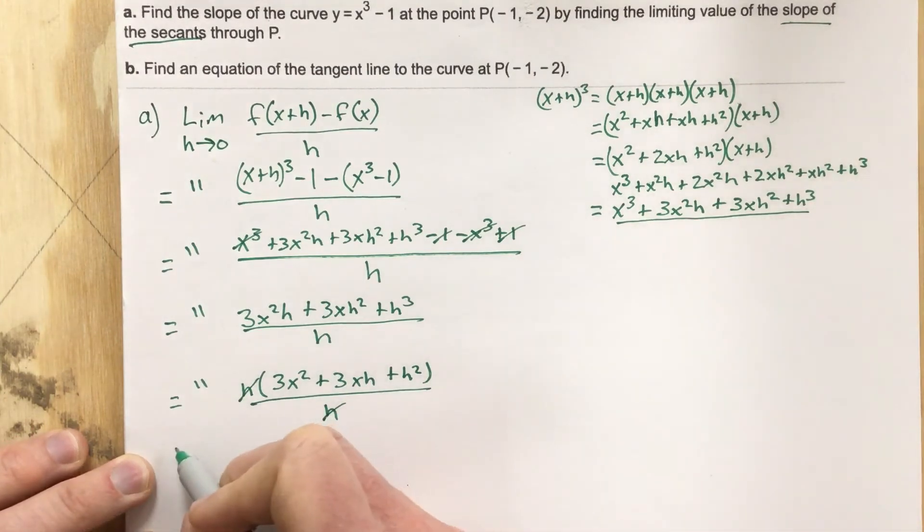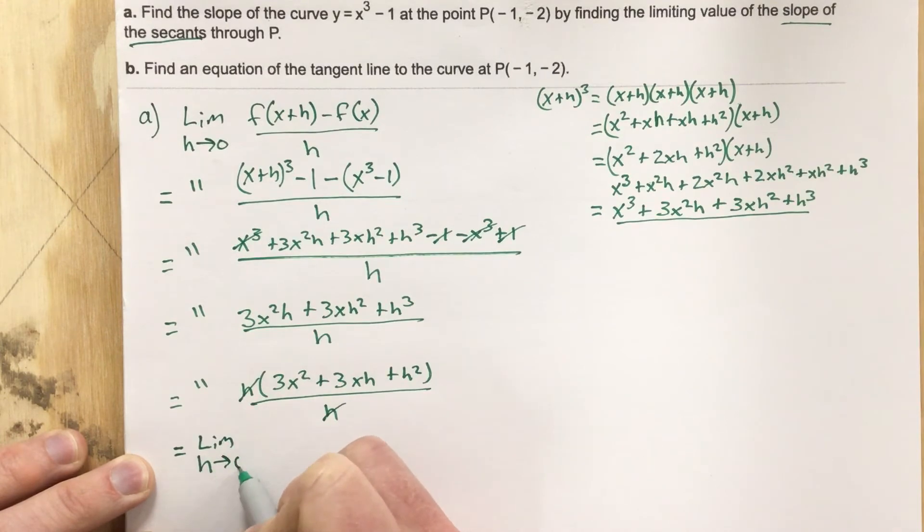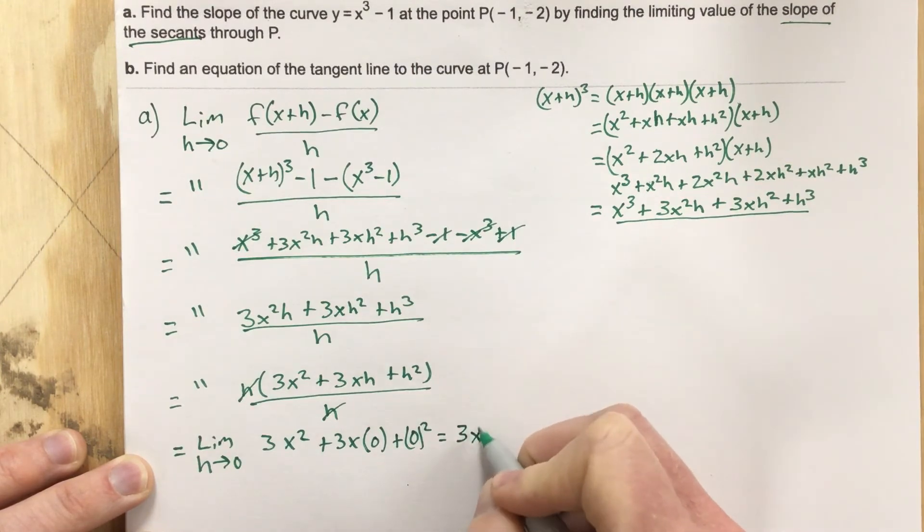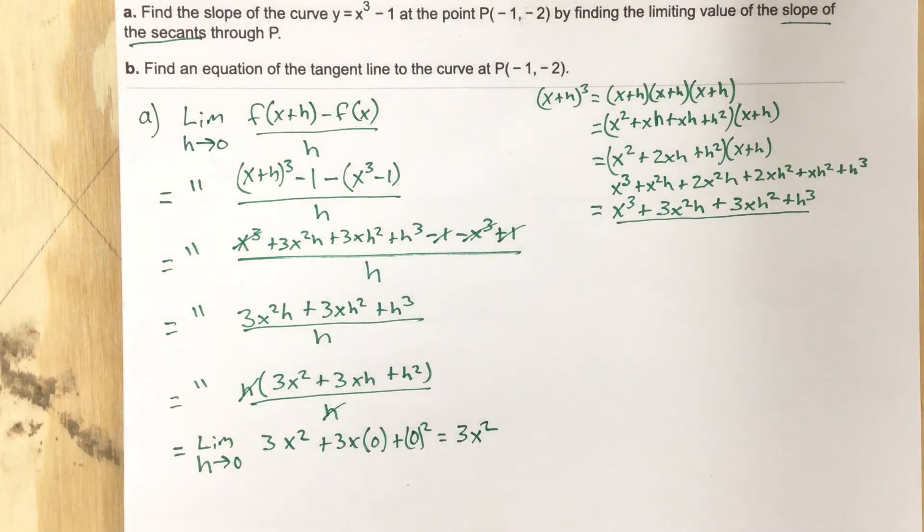And we're left with the limit as h approaches 0 of 3x squared plus 3xh. I'm going to plug in the 0 for this h plus the 0 for this h. So we end up with just 3x squared for our expression.